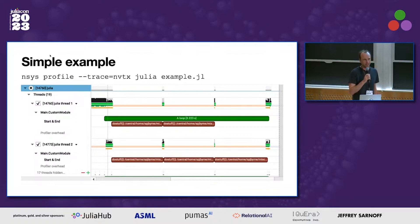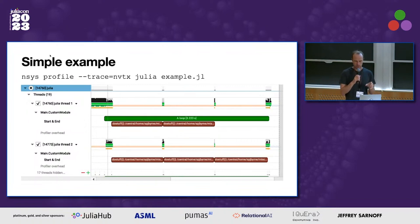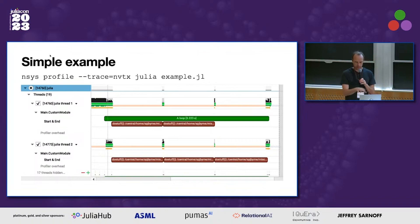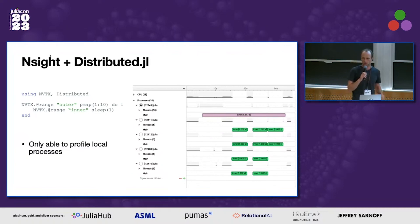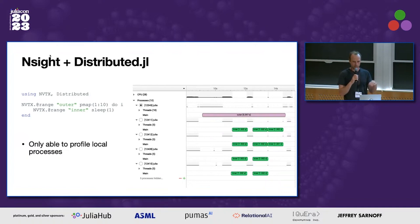One particularly nice thing about Nsight is it actually supports non-overlapping tasks — so if Julia switches tasks, it's okay if they don't overlap, and they can even switch threads. Nsight supports that as well. For threaded parallelism, distributed.jl works as well. Just run your distributed.jl code, and as long as everything is on the same node, it'll happily identify child processes so you can profile distributed.jl code.